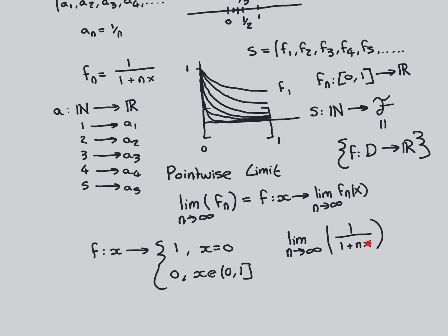Starting with x=0: this term completely vanishes, giving the constant sequence 1, 1, 1, 1, ... which converges to 1. Therefore, x=0 is mapped onto 1. That explains the first rule of our limit function.